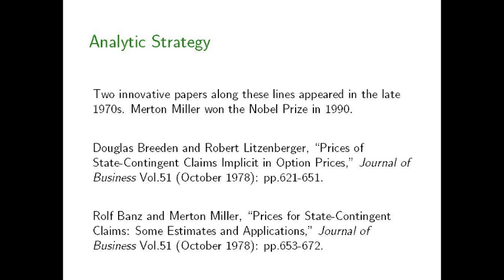The breakthrough along those lines didn't occur until 20 years later, when in the late 1970s, two pairs of economists — Douglas Breeden and Robert Litzenberger, and Rolf Bonds and Merton Miller — showed in their papers how, in the real world, one could use the information in option prices to make inferences about contingent claims prices for a rich, real-world, complex economy with a complex financial system, like, for example, the United States today.